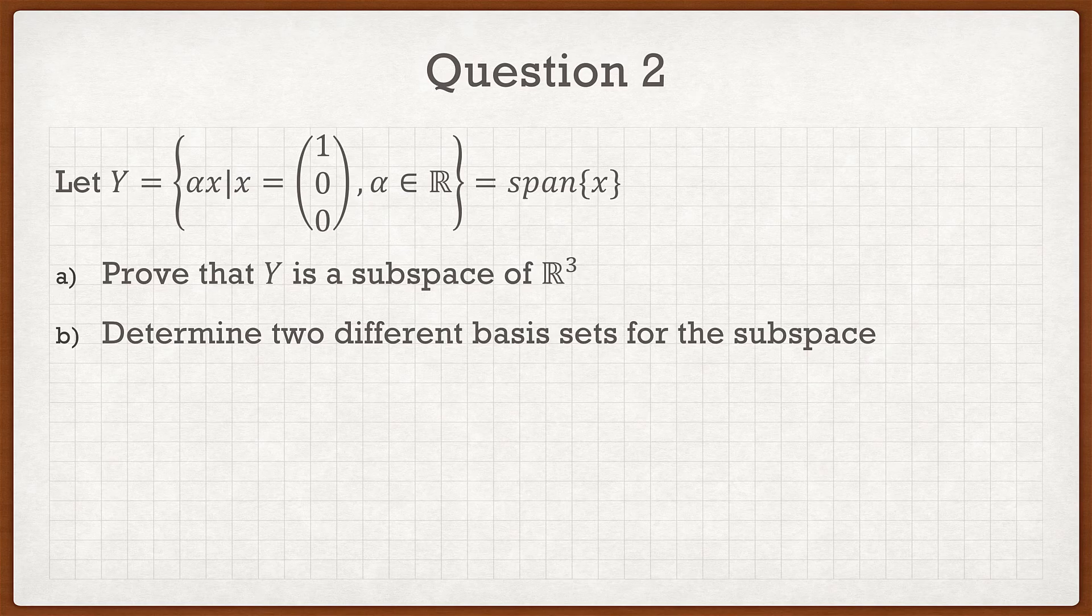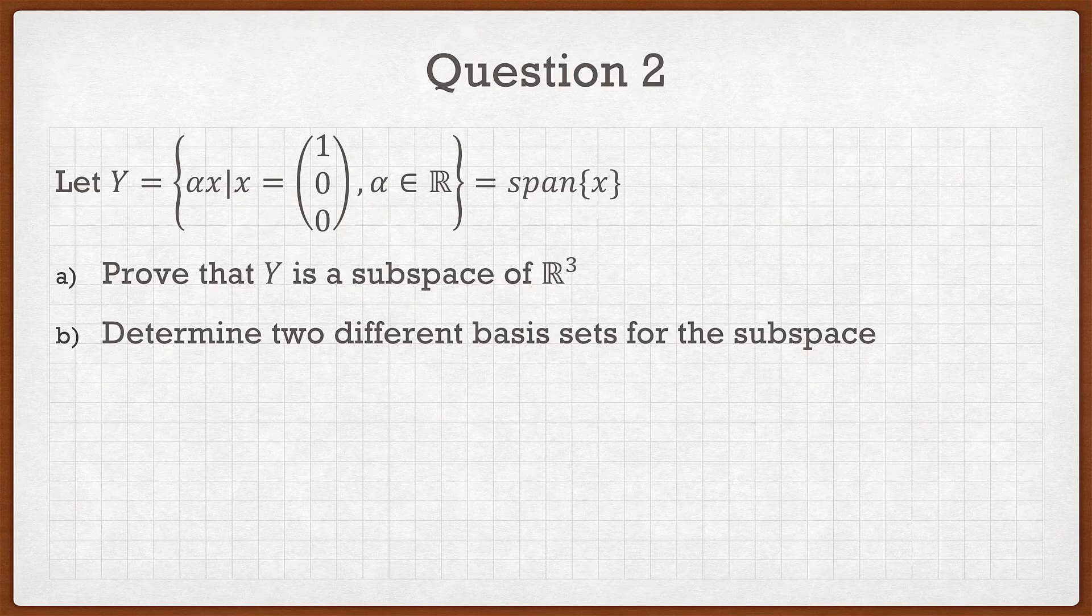So the question itself is very simple. Let Y equal αx where x equals the vector (1,0,0) and α is a member of the reals. And what it wants us to do is prove that Y is a subspace of R³ and determine two different basis sets for the subspace.